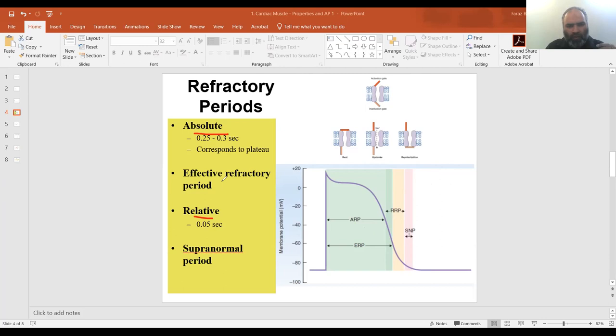This is the difference between absolute and relative. Now for the MBBS and postgrad students, there is an effective refractory period which is shown here. During this time in the effective refractory period, in this zone, you can have a situation where a strong stimulus is applied and an action potential is developed but it does not propagate.